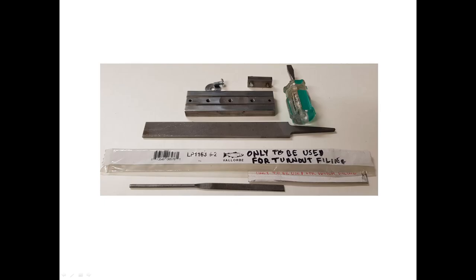The file should have a blind edge. Before starting, ensure that the end of the rail to be filed is cut straight, and then identify the head and the foot of the rail.